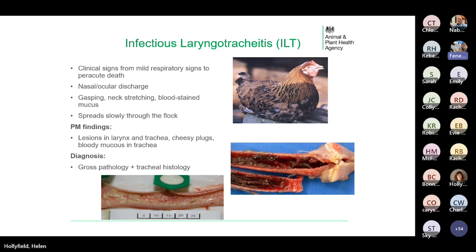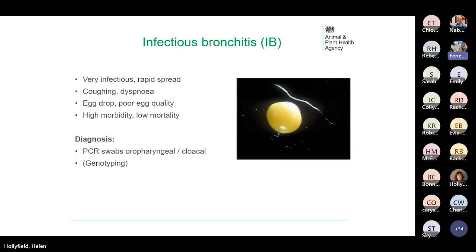Definitive diagnosis of ILT is made on gross pathology and tracheal histology. Infectious bronchitis is caused by a coronavirus and there are many variants. IB spreads rapidly in a matter of hours and causes coughing and dyspnoea. Infection causes a marked drop in egg production and adversely affects egg quality — eggs produced are small, ridged and thin-shelled with watery whites, where the yolk appears to be free-floating. There is typically high morbidity and low mortality. Diagnosis is made by PCR on oropharyngeal and cloacal swabs, using plastic stem swabs, not wooden ones.